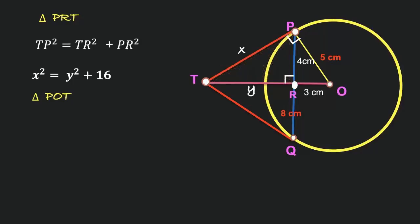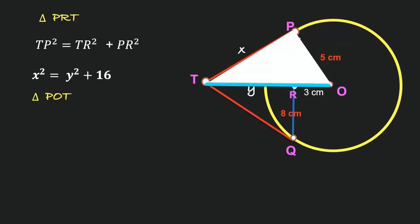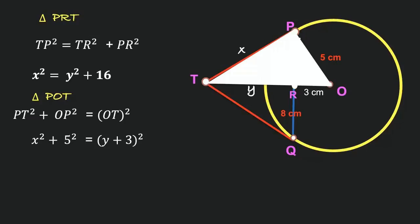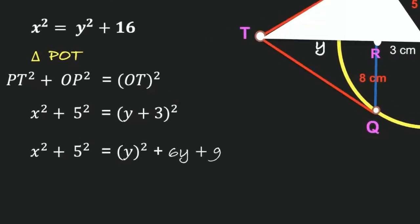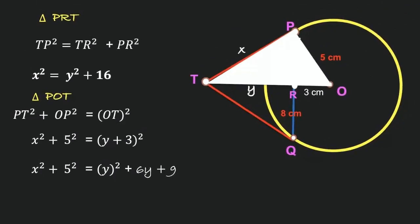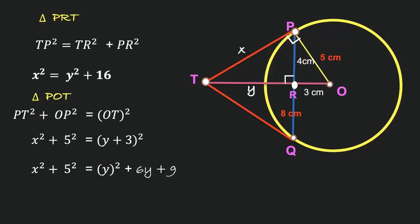Now consider triangle POT. The hypotenuse is OT. PT² + OP² = OT², and OT is y + 3. So x² + 5² = (y + 3)². Using the algebraic identity: x² + 25 = y² + 2 × y × 3 + 3², which gives x² + 25 = y² + 6y + 9.